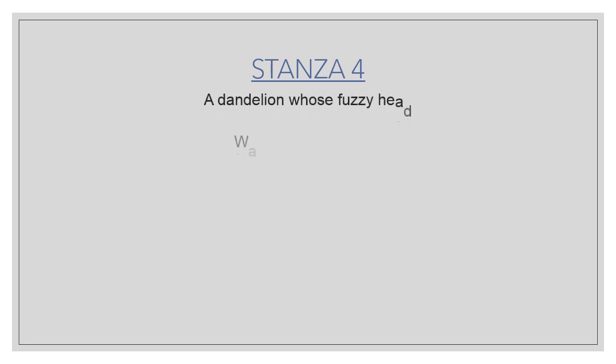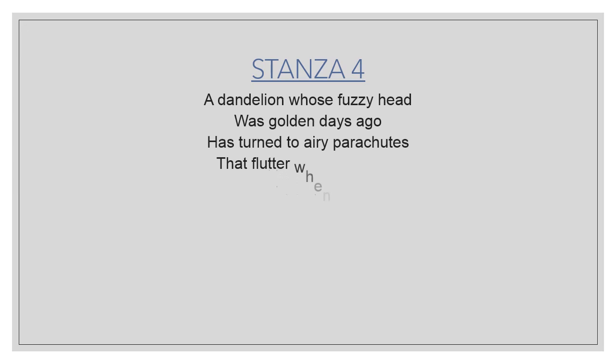Moving to Stanza Four: 'A dandelion whose fuzzy head was golden days ago has turned to airy parachutes that flutter when you blow.' A dandelion is a kind of flower. Fuzzy means soft head. 'Was golden days ago' means it was golden a few days before. 'Has turned to airy parachutes' means has turned like an umbrella — you know how a parachute looks. 'That flutter when you blow' means they move in the air like a bird when you blow air at them.